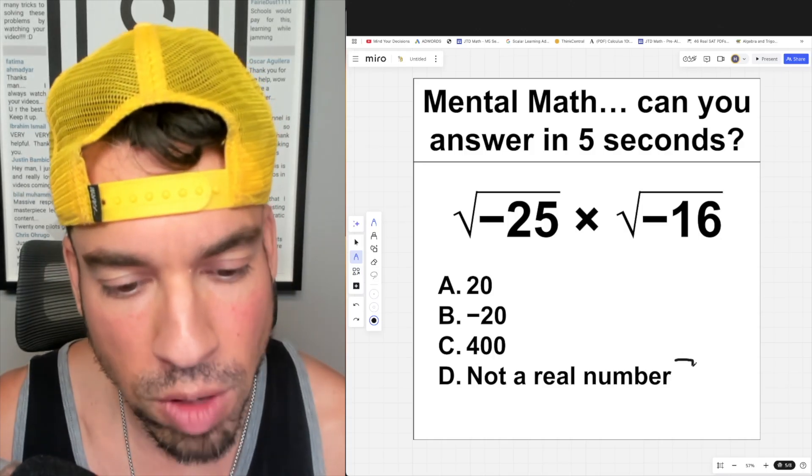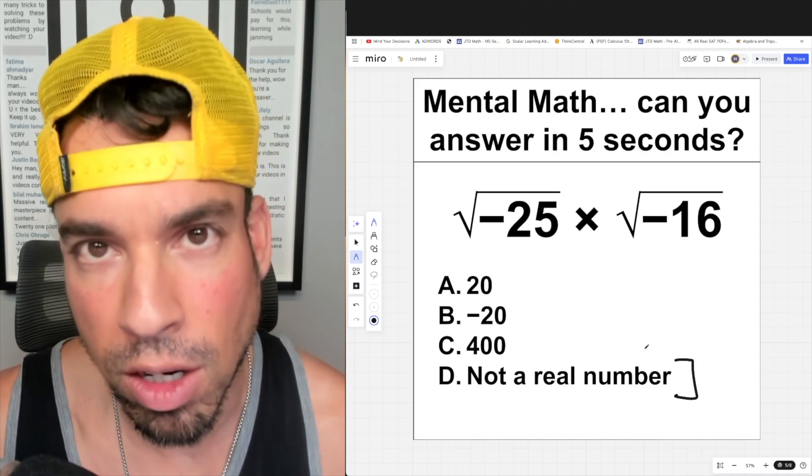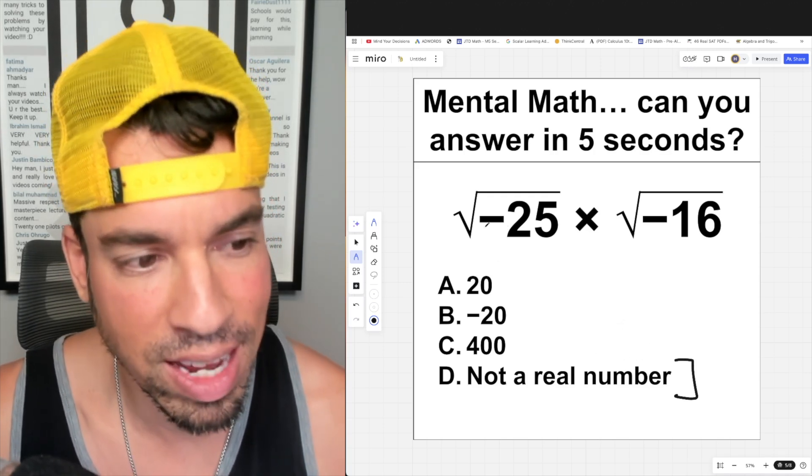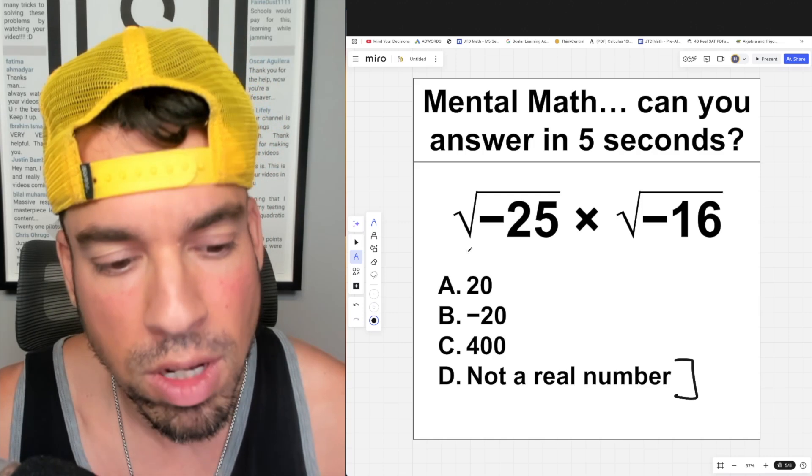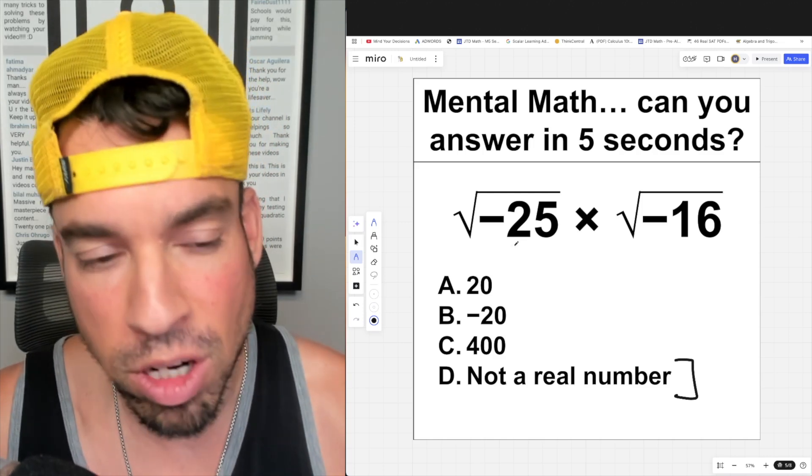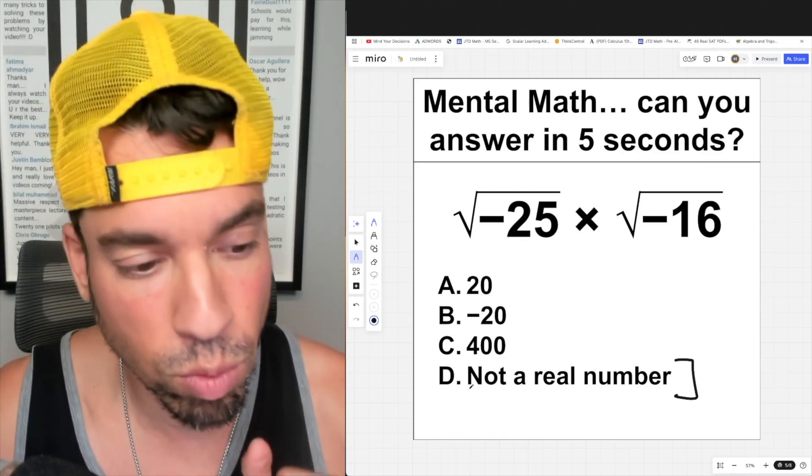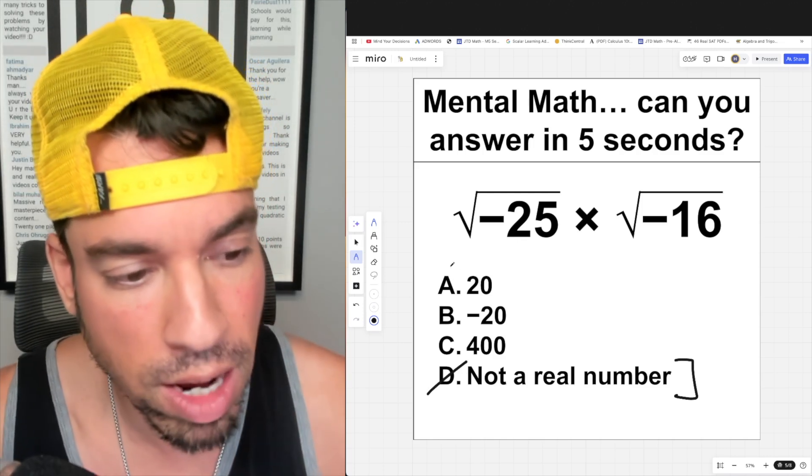First things first, let's address this. This might have been a go-to answer for a lot of you guys because we see negatives under radicals. When we see negative under radicals, that means we are going to get an imaginary number, but the final answer will not be imaginary, so we're going to cross this one out.